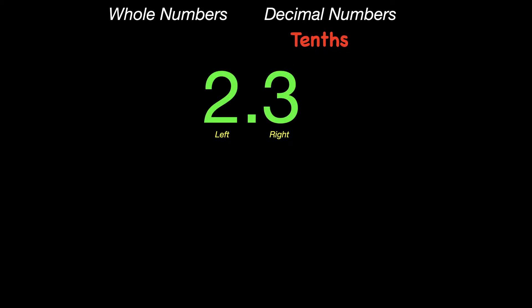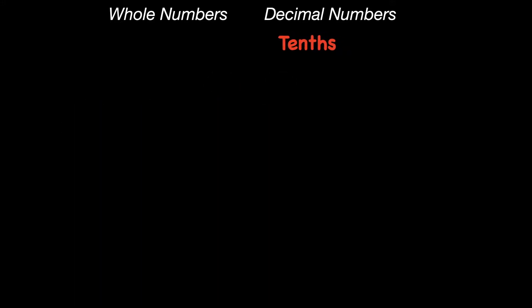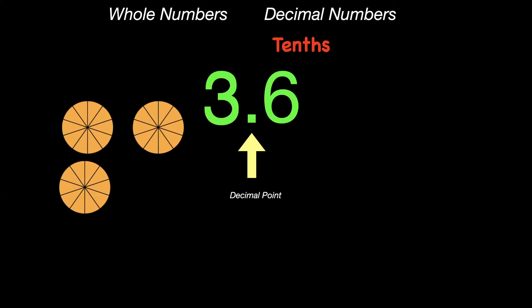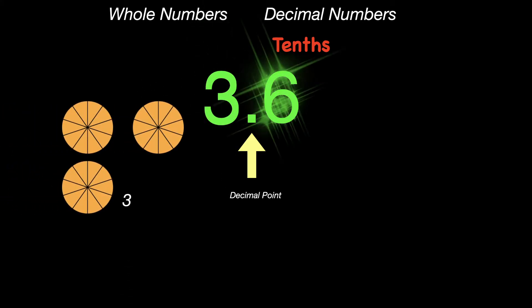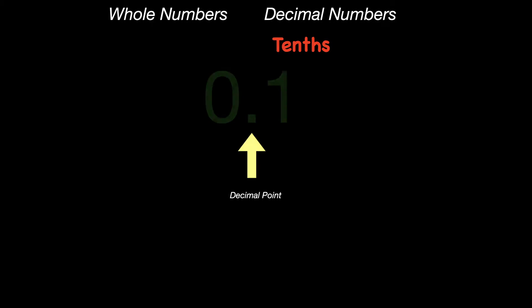This would be 2 and 3 tenths. The 2 on the left would represent 2 whole. The 3 on the right side would represent the fraction 3 tenths. 3 and 6 tenths. The 3 on the left would be 3 whole. The 6 on the right side would represent the fraction of 6 out of 10, or 6 tenths.